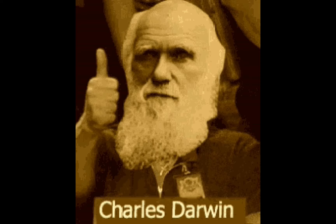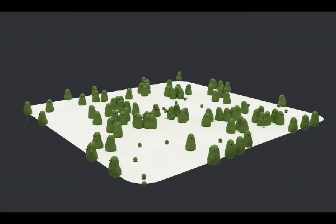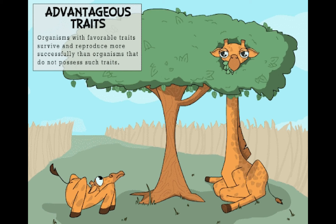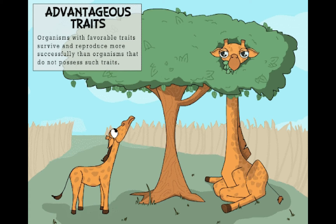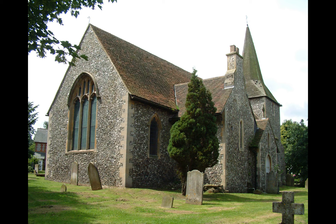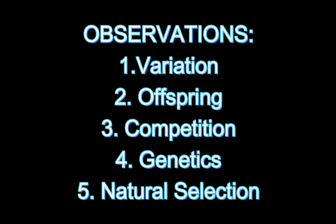Darwin waited 23 years before he actually published his theory on natural selection, because it was difficult for different religions to understand and accept his ideas.